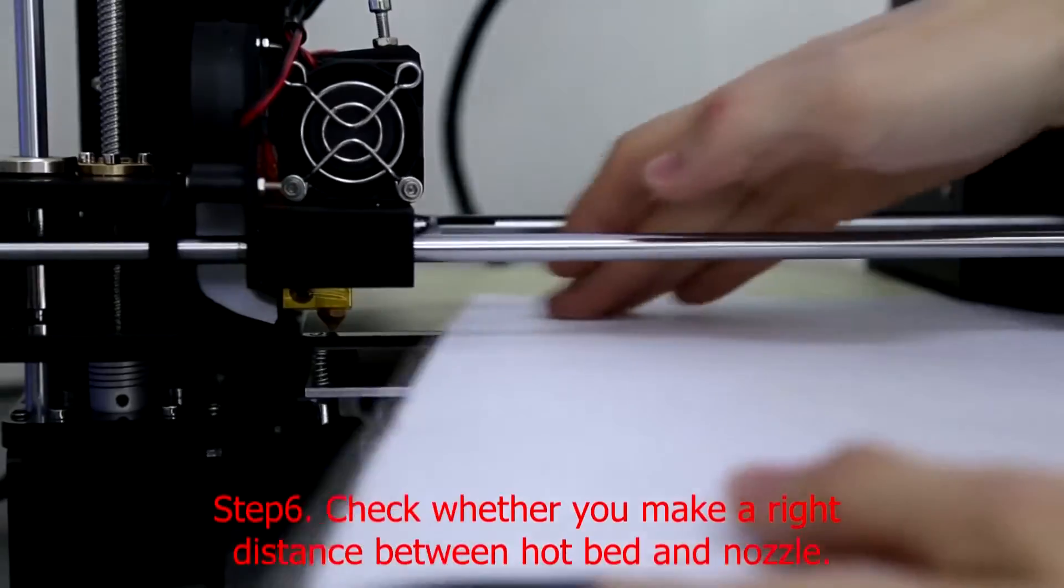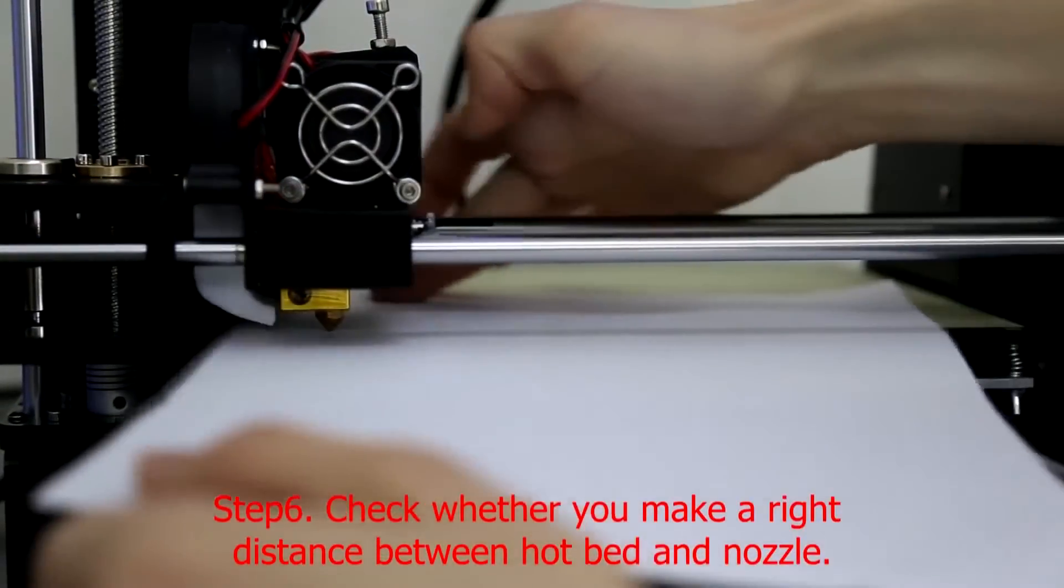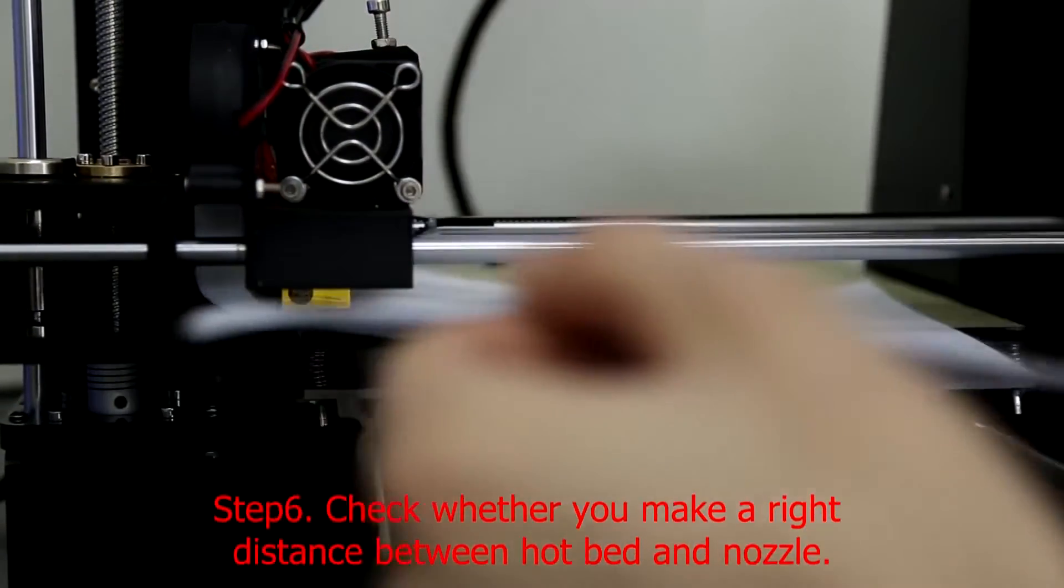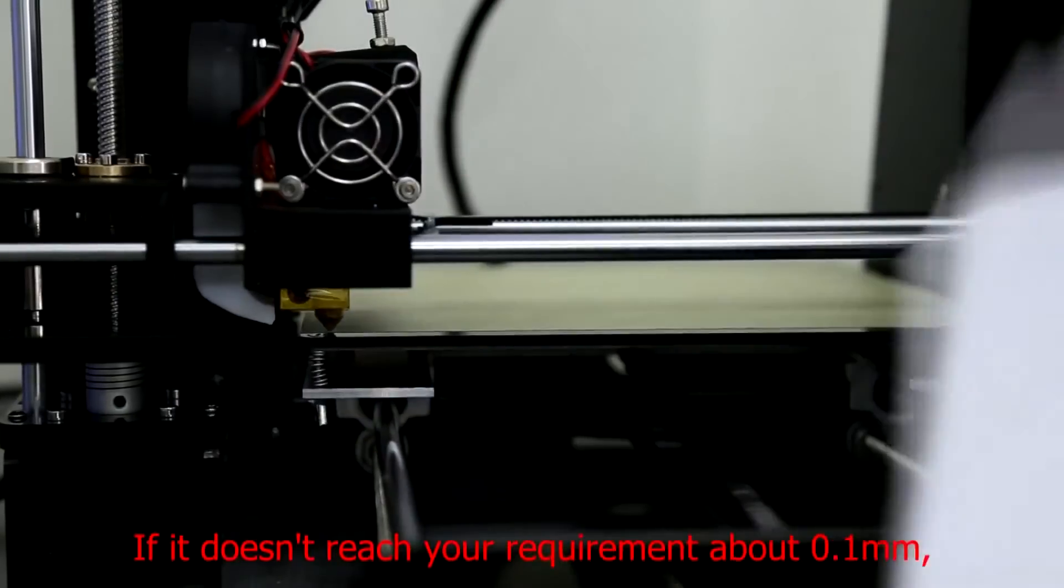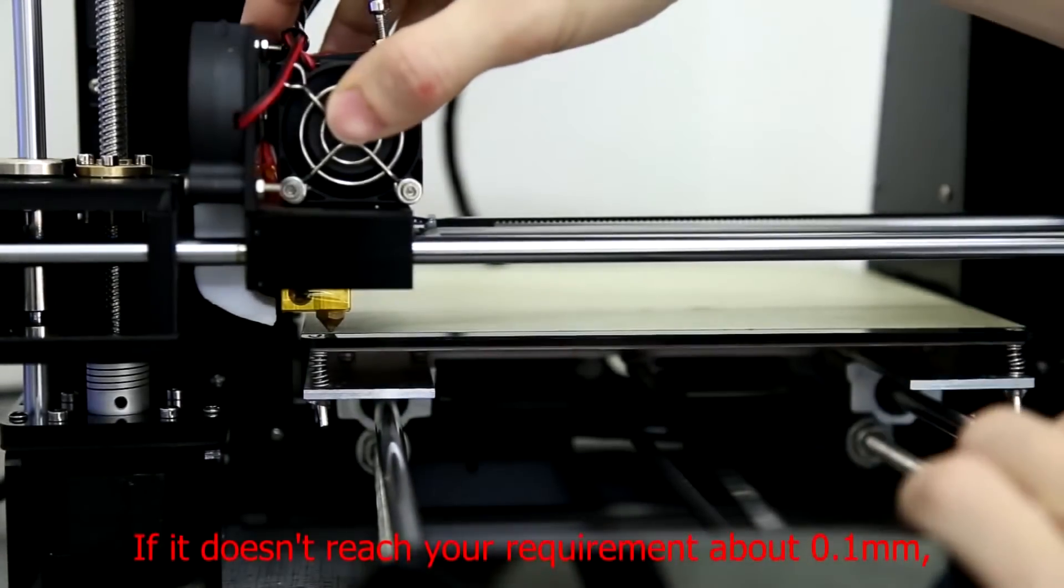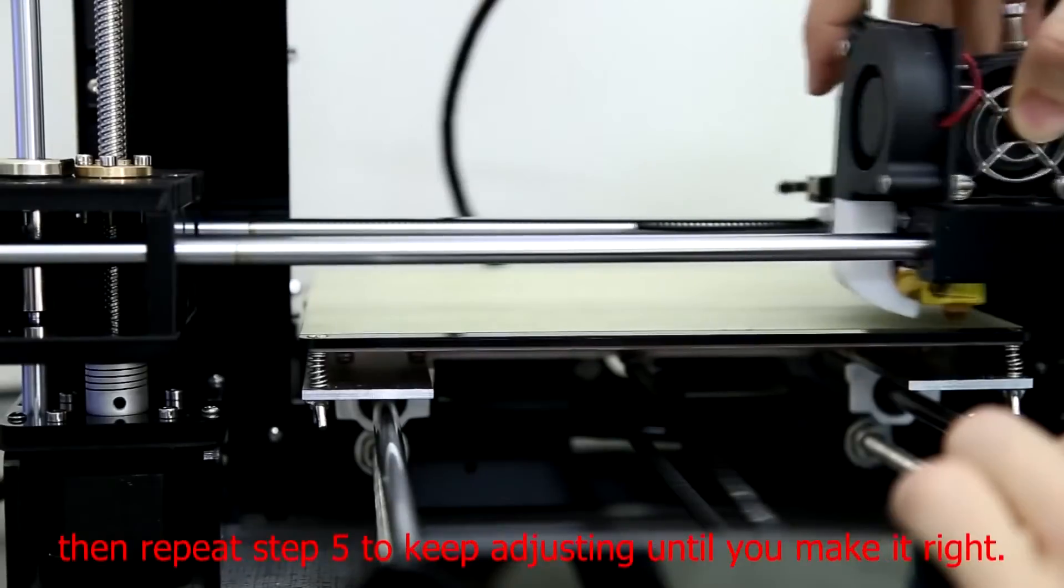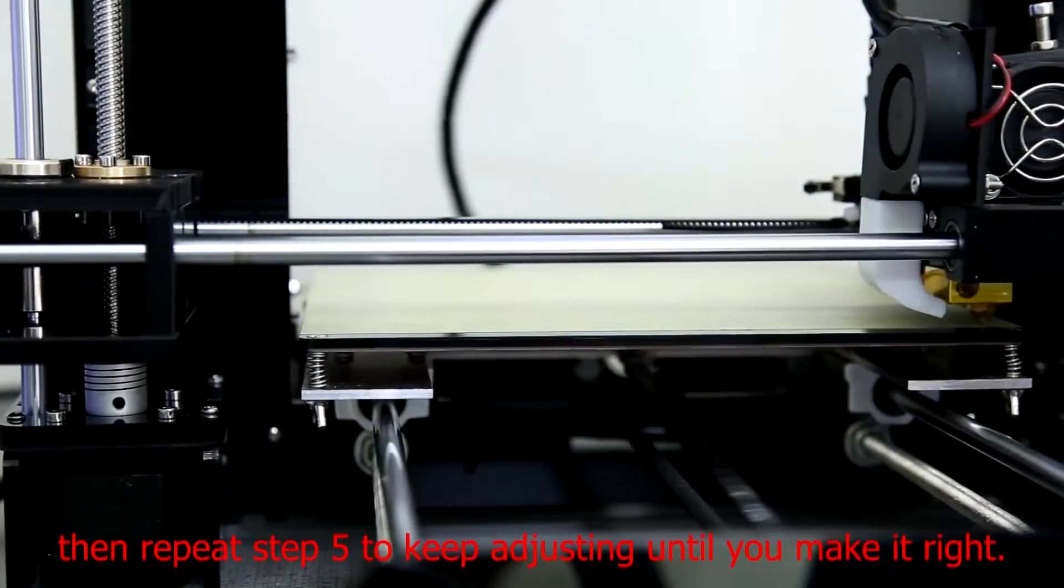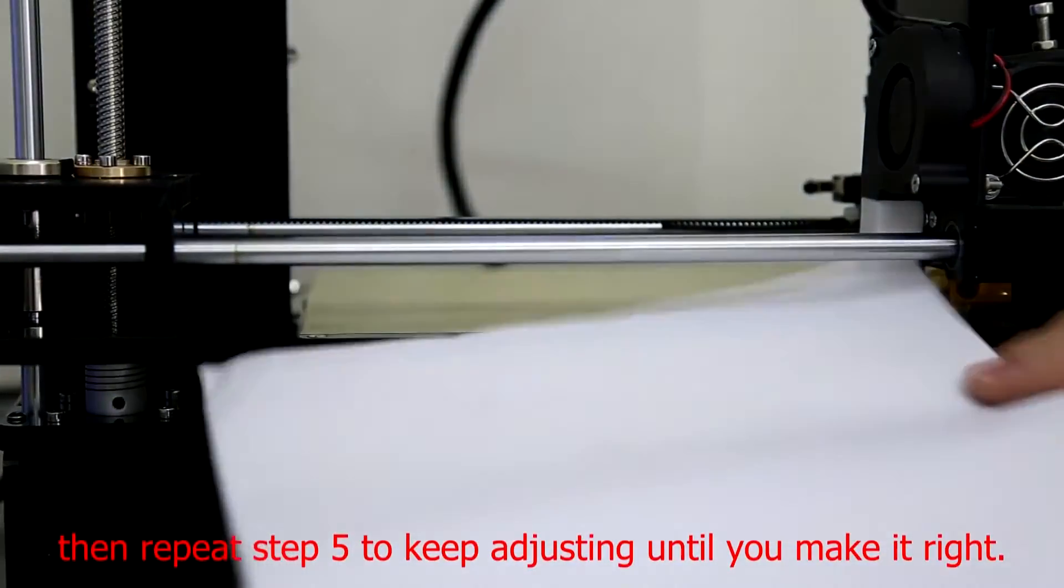Step 6: Check whether you've achieved the right distance between hot bed and nozzle. If it doesn't reach your requirement of about 0.1 mm, then repeat Step 5 to keep adjusting until you make it right.